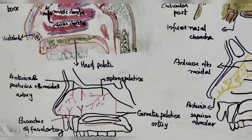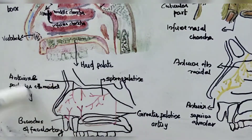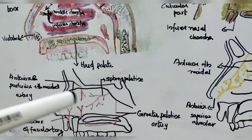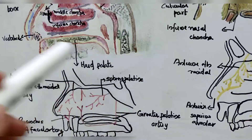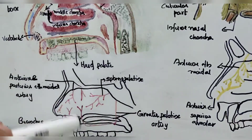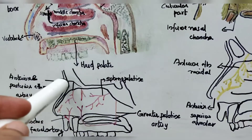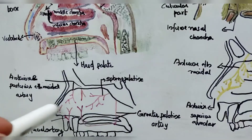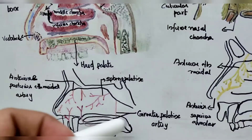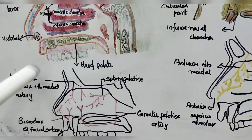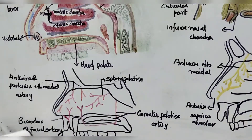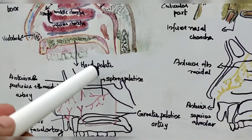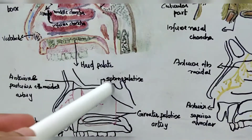Now we will discuss blood supply, venous drainage, and nerve supply. The blood supply is similar to that of the nasal septum. The lateral wall can be divided into four compartments: anterosuperior, posterosuperior, anteroinferior, and posteroinferior. The anterosuperior compartment is supplied by the anterior and posterior ethmoidal arteries. The anteroinferior compartment is supplied by branches of the facial artery. The posterosuperior part is supplied by the sphenopalatine artery.